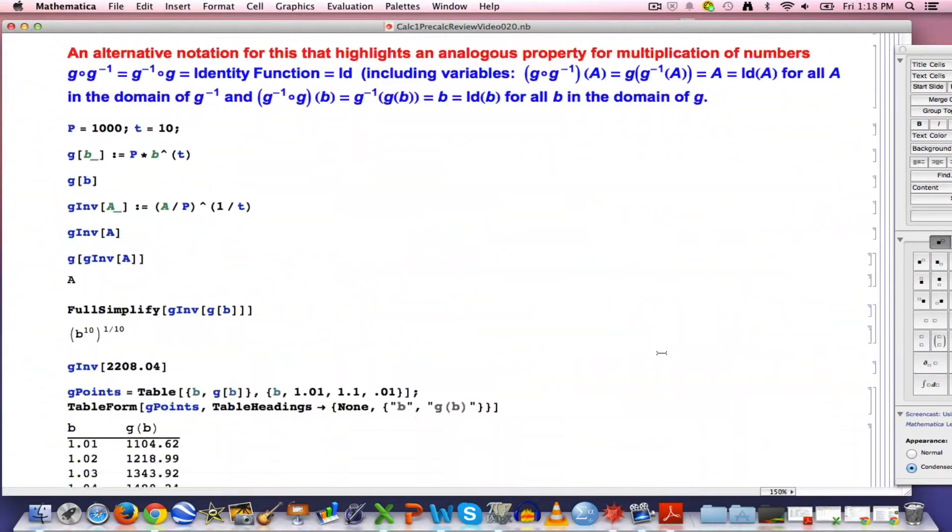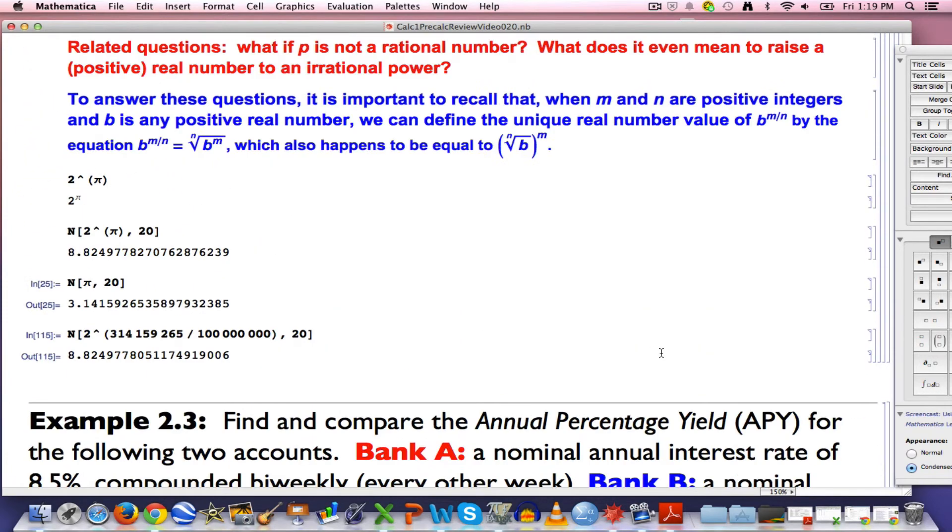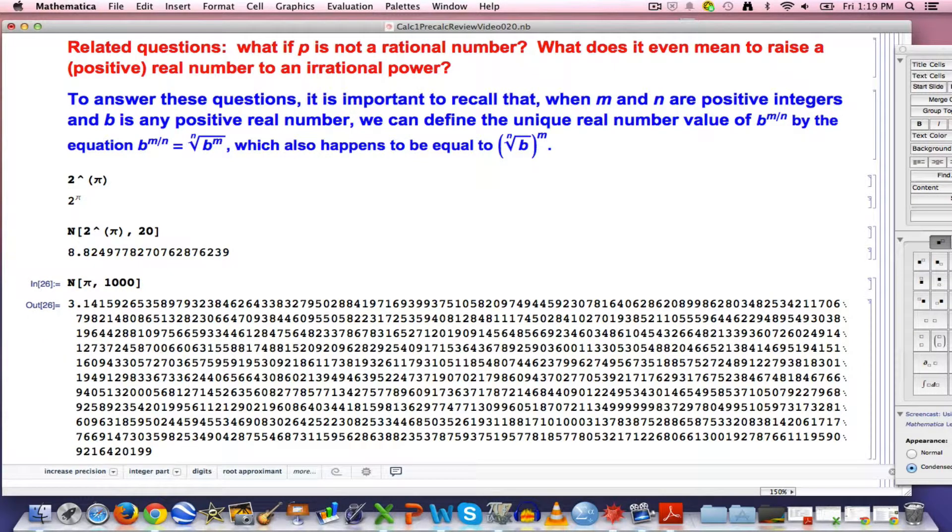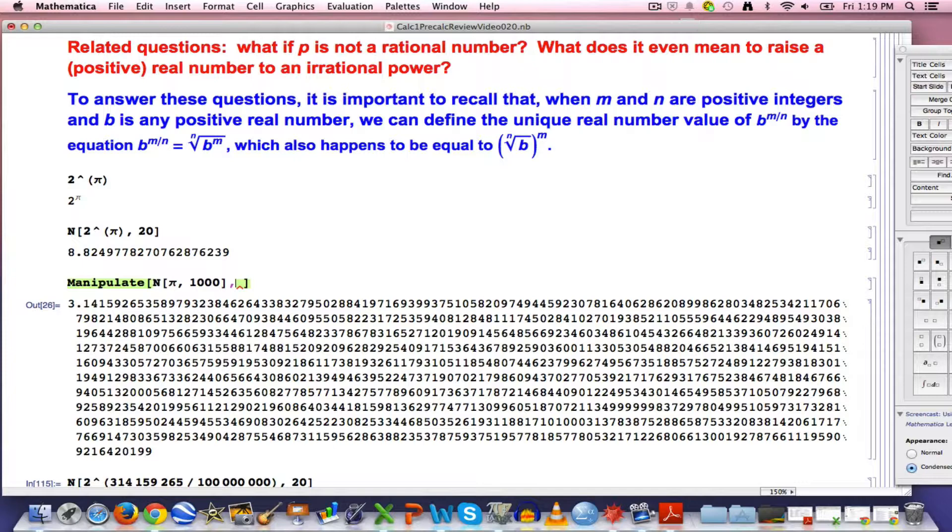We're going to go down to that fun example from the last video, where I showed you can use the Mathematica command capital N to approximate any number of digits you want for pi. Here's 20 digits of pi. If you want to see 1,000 digits of pi, just replace this 20 with 1,000. There you go. I can actually put this inside Manipulate. Manipulate is the command that can animate things. What's going to be the animation parameter? I'm going to make the number of digits the animation parameter.